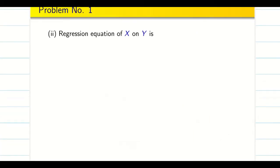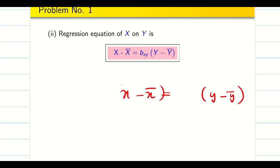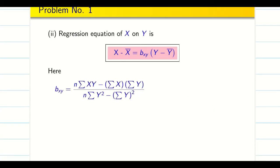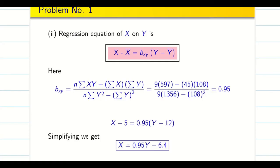We found the first regression equation. Let us go for the next regression equation x on y. The formula is very simple: (X - X̄) = bxy(Y - Ȳ). Whenever there is x minus x̄ on the left, we have to find bxy. We know the formula, and then substitute the values and find the regression line. Now we found both the regression equations.